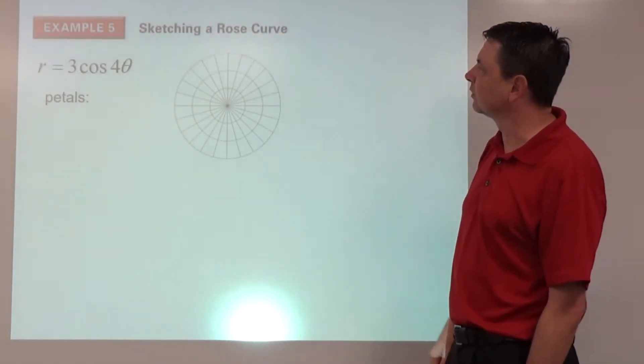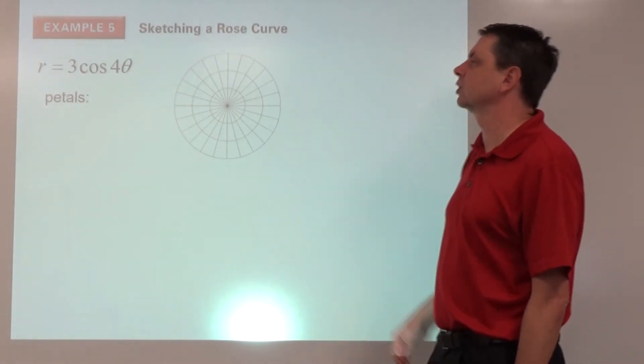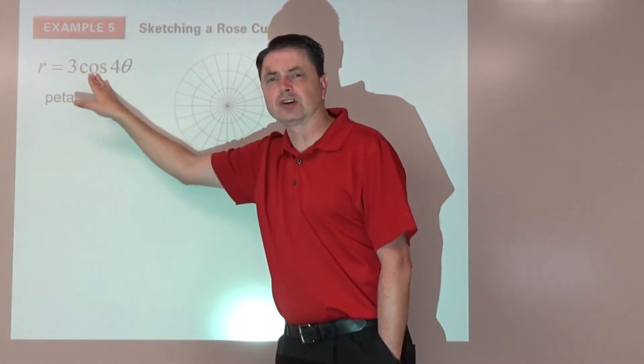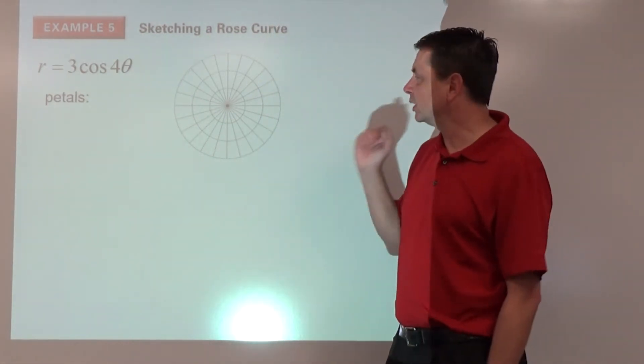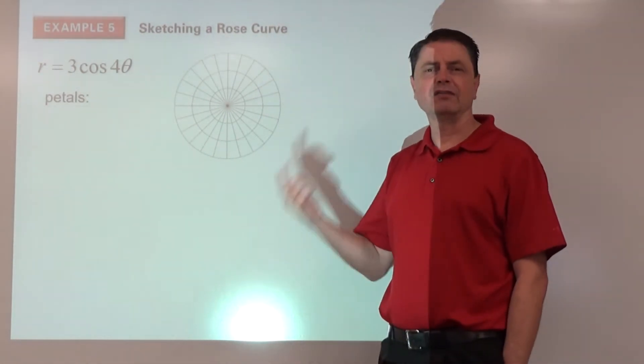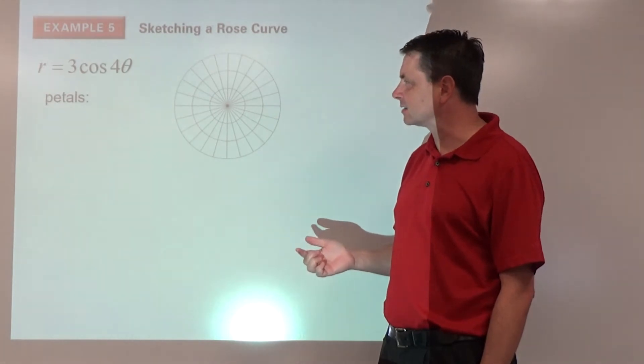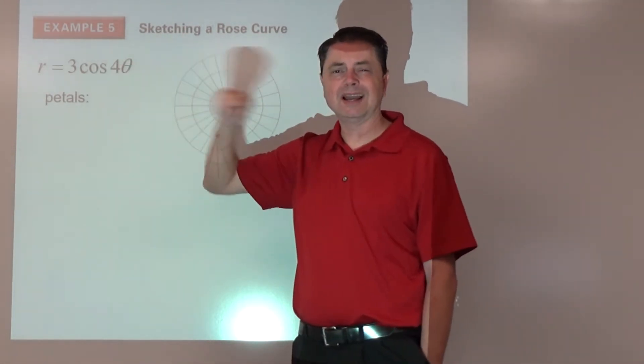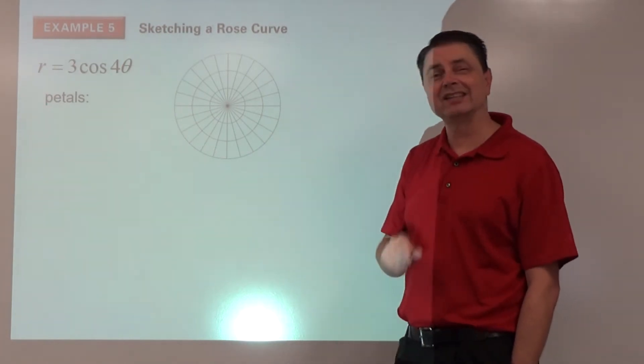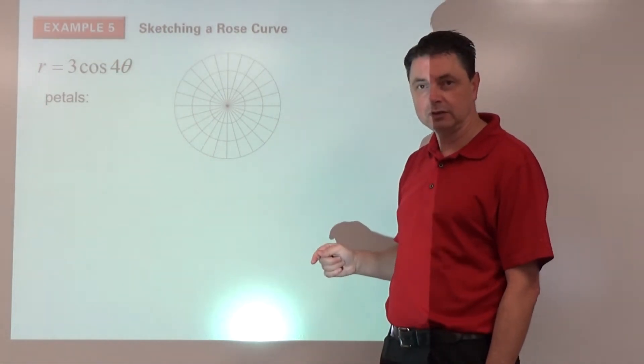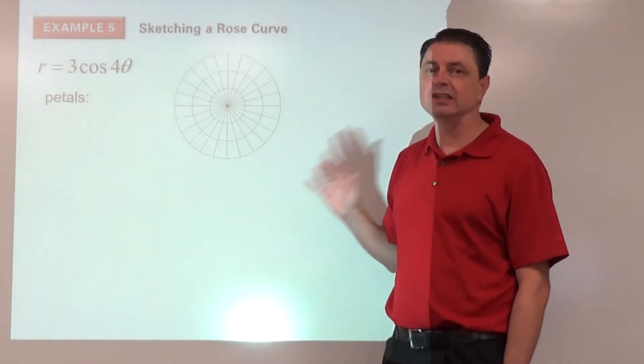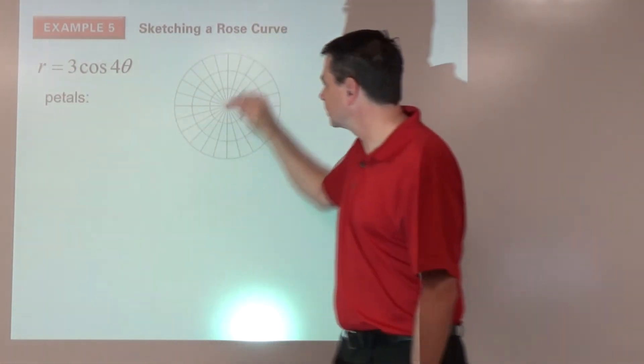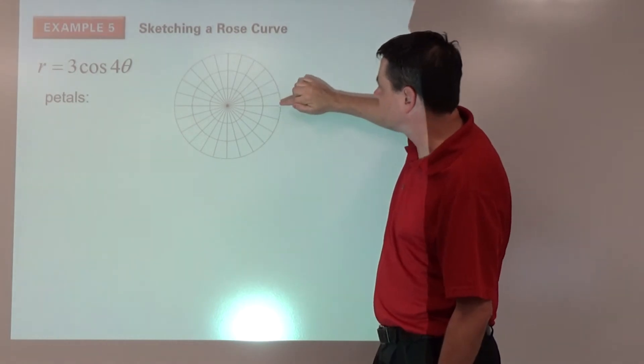Example number 5: let's sketch a rose curve. We have the easier variety, cosine, so we know that first petal is going to be on the x-axis. Since the n is 4 and that's even, we're going to double it. This is going to have 8 petals. They're going to be equally spaced and all 3 away from the origin. So we can plot our first one: 1, 2, 3, there's going to be one here.